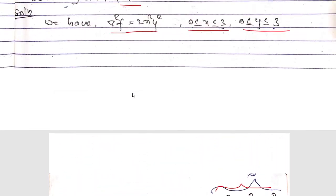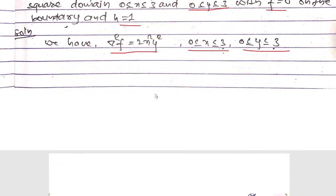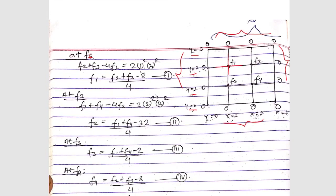The right-hand side function is 2x squared y squared. We are calculating at f1, which is at coordinates (1, 2), so x = 1 and y = 2. This gives 2 × 1² × 2² = 8. So equation 1 is: f1 = (f2 + f3 − 8) / 4.